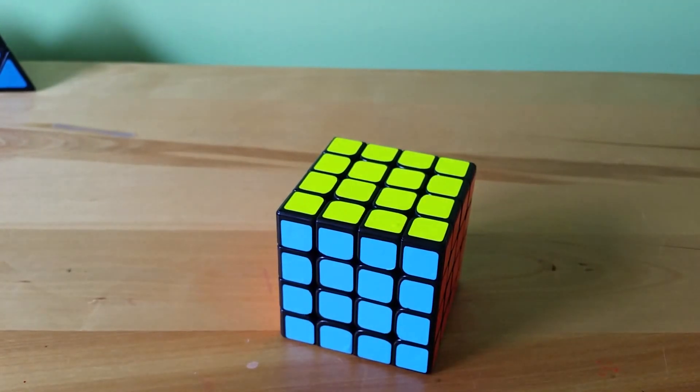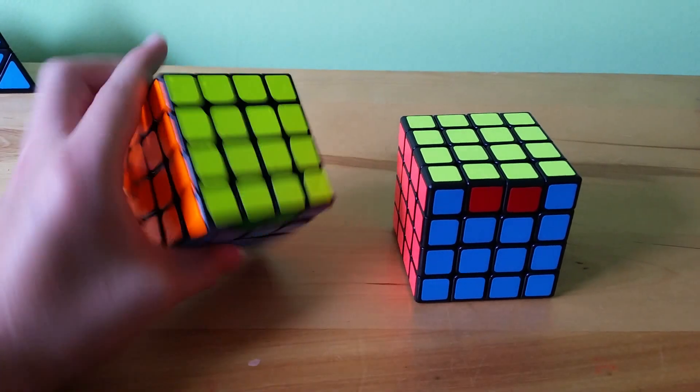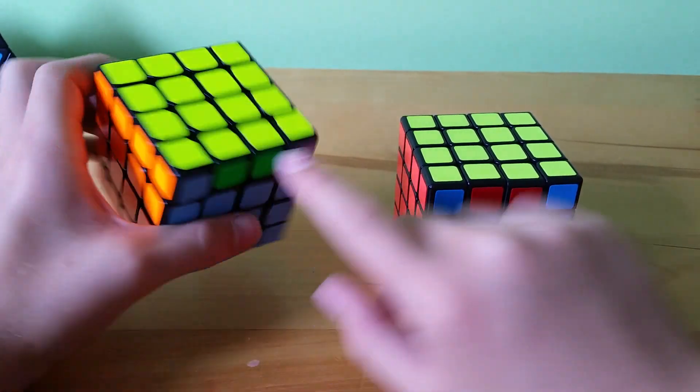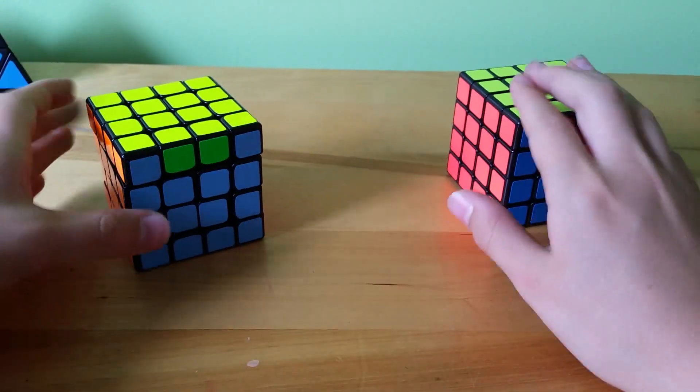Okay, let's take a look at PLL parity. Okay, there are two PLL parity cases. One is where it switches two opposite edges and one where it switches two adjacent.